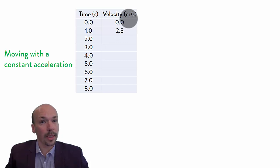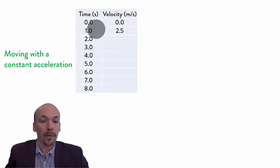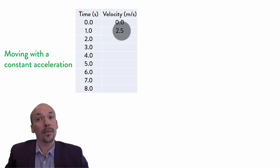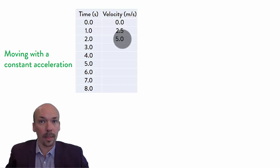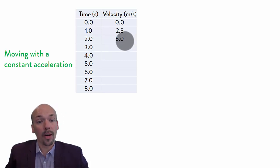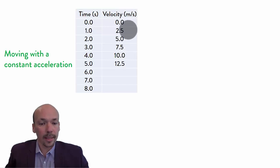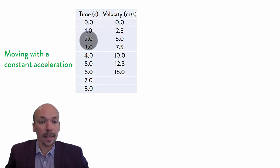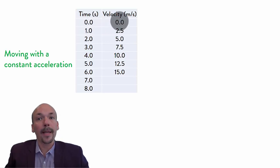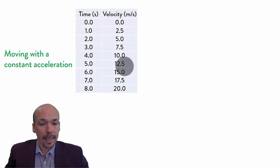2.5 meters per second. And if it will accelerate with a constant acceleration, that means that after another second, a velocity of 2.5 meters per second will be added. So that will be 5.0 meters per second. And again, after 1 second, 2.5 meters per second will be added. So now we are speaking about a constant acceleration — every second, the same velocity is being added.